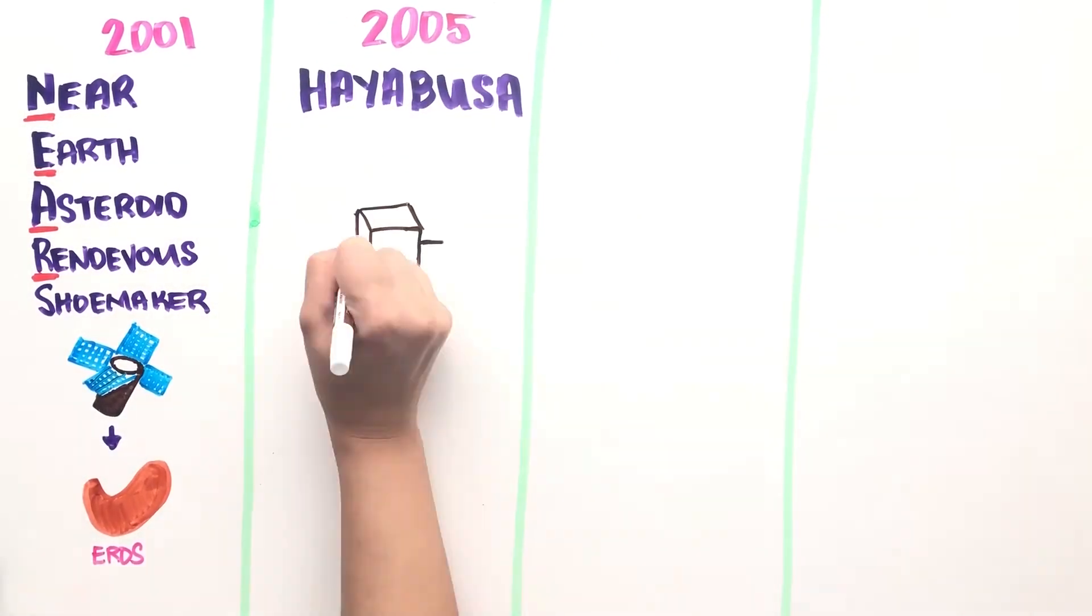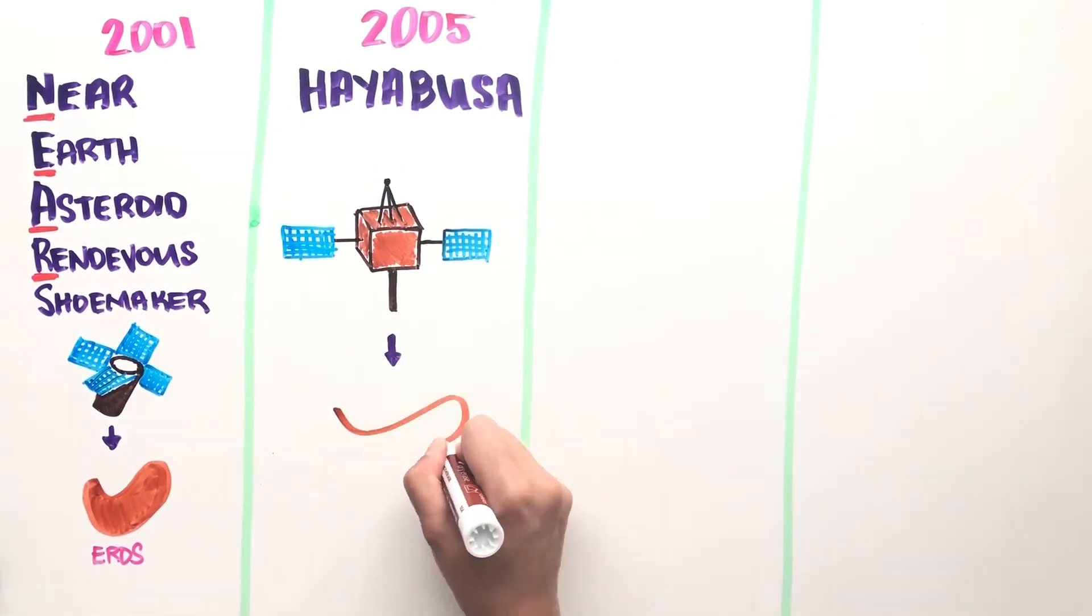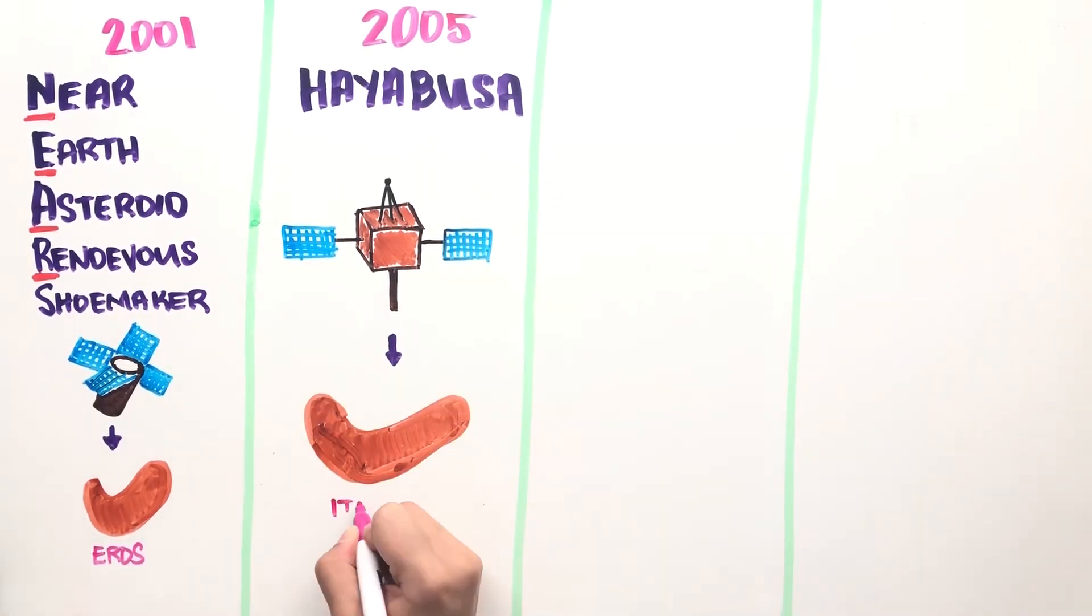Japan's Hayabusa was the first to land and take off from an asteroid in 2005 and returned samples to Earth in 2010.